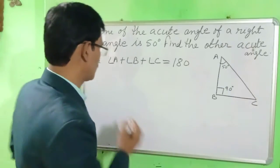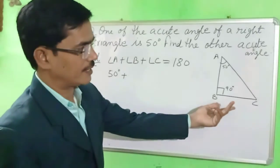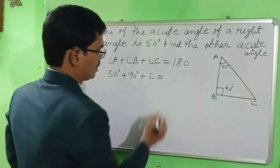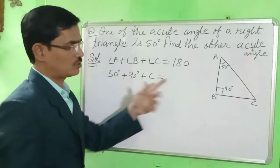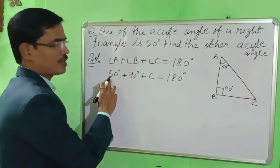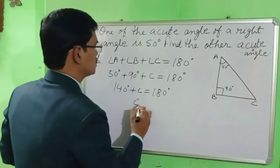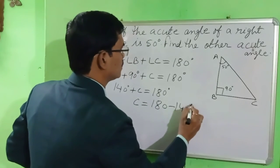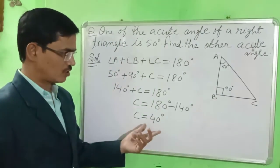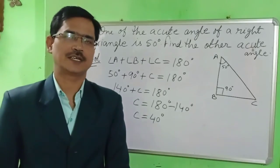One angle is 50 degrees, angle B is 90 degrees (right angle), and we have to find angle C, with the total being 180 degrees. So 90 plus 50 equals 140 degrees. Therefore, C is equal to 180 minus 140, which gives us 40 degrees. In this way you can solve it very easily. Thank you, have a nice day — please like, subscribe, and share my channel.